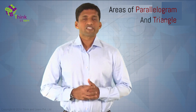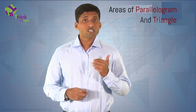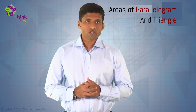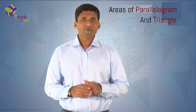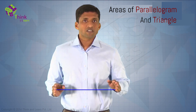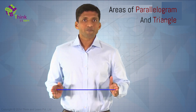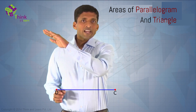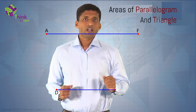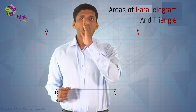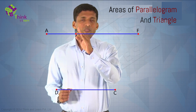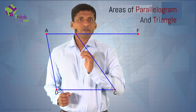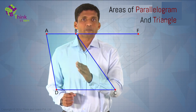Let's look at some examples where figures are on the same base and between the same parallels. For that, let's take a line DC. Now take another parallel line AF. If I take a point B here and join A, B, C, D — ABCD is a trapezium.